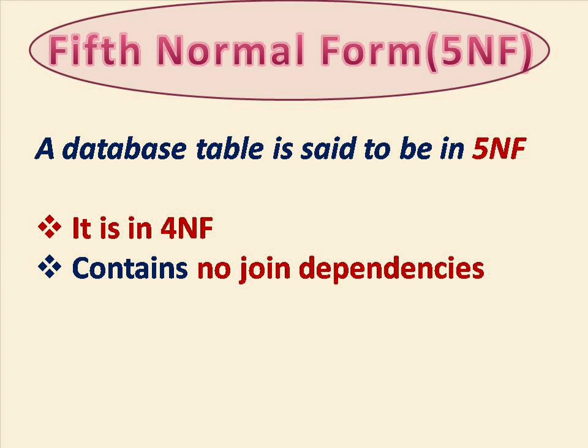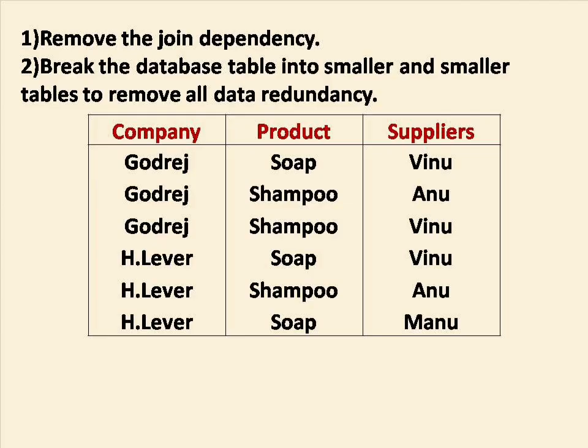What is the fifth normal form? The fifth normal form deals with join dependency. A table can be redesigned by joining multiple tables, and each table contains a subset of the attributes and values of the original table. Then the table has a join dependency. In one table, the relationship between attributes is called dependency; in this context, it is called join dependency.